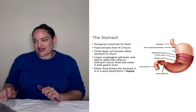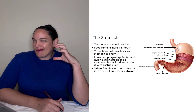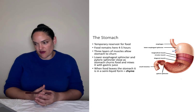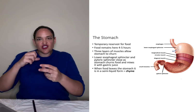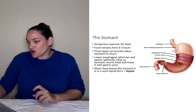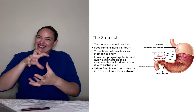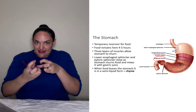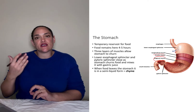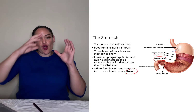The stomach is another site of digestion and a little absorption, but its main purpose is to hold food until the small intestine is ready for it. Food remains in the stomach for about four to five hours. What's interesting is that the stomach has a third layer of muscle — in addition to longitudinal and circular muscle, it has diagonally oriented muscle — and that's what helps the stomach churn and mix digesting food with gastric secretions. By the time food leaves the stomach it's in a semi-liquid state called chyme.